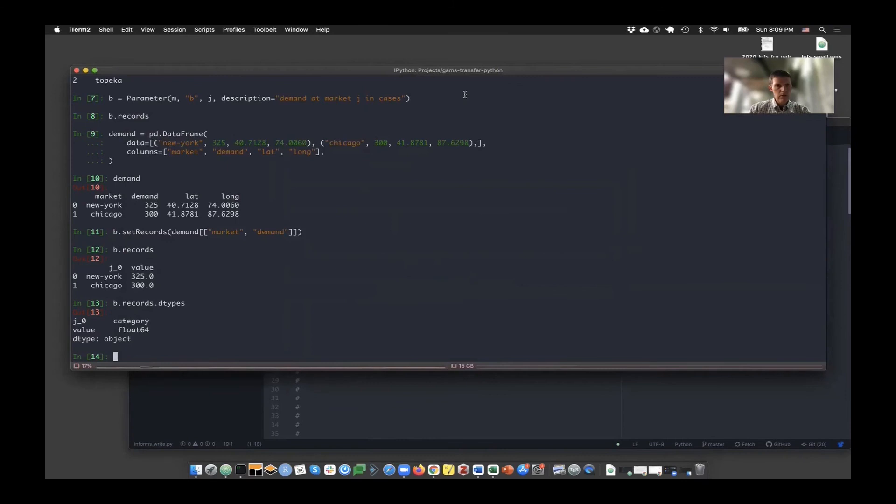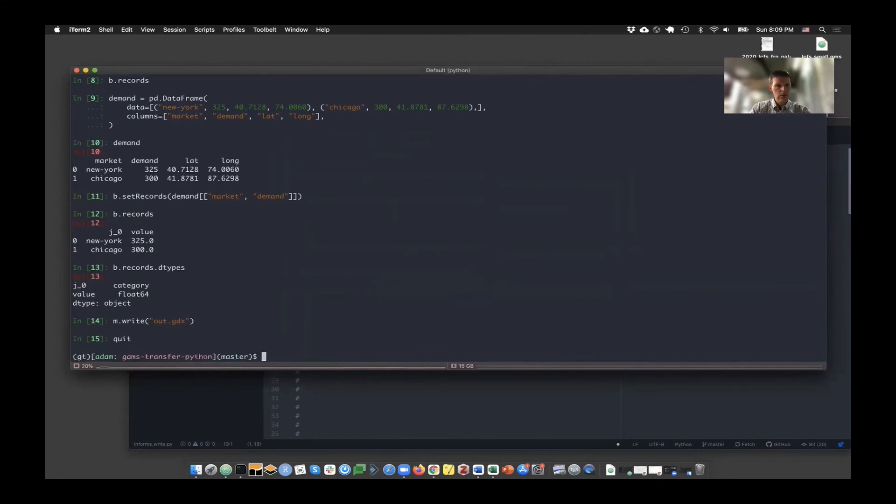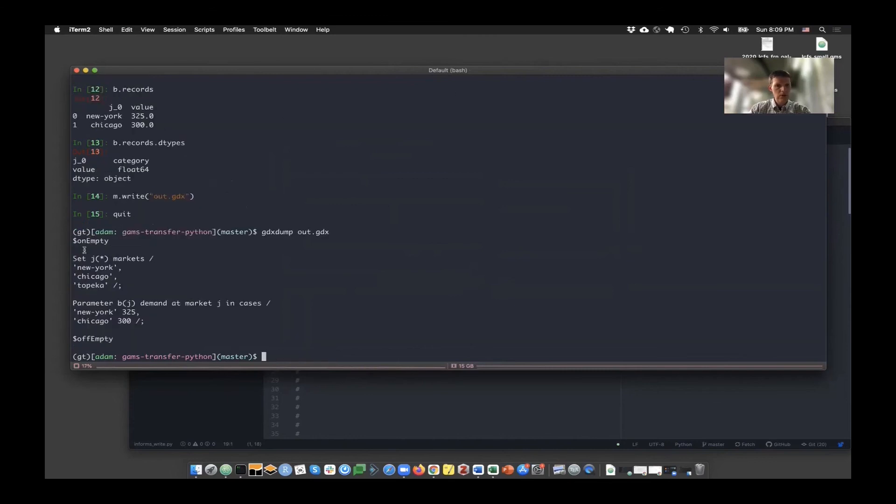If I want to go ahead and just write out this file, I simply do m.write and then out to a GDX file. And that's it. So just to show you what that file looks like from GDX dump's perspective, I'll just look at out.GDX and you can see that I've created a set with the units, a subset of the universe and a parameter B, which is a subset of J. And it was created with as little pain as possible. Hopefully you guys feel the same way.